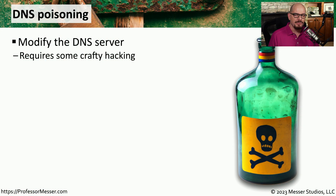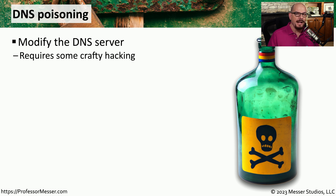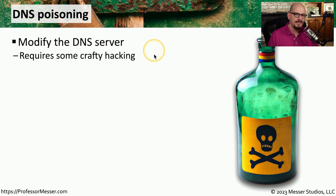We rely on our domain name services, or DNS servers, to provide us with a conversion between a fully qualified domain name and an IP address. An attacker taking advantage of a number of different DNS poisoning attacks could cause a user to visit an IP address that they did not originally intend. Some of these DNS poisoning attacks involve modifying the DNS server itself, but DNS servers are very well protected, so this is not the kind of attack that is commonly used when you think of DNS poisoning.